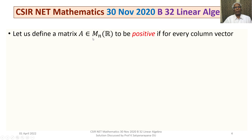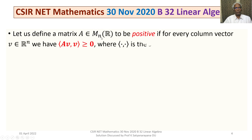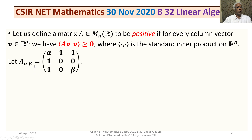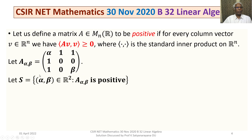The problem defines a matrix A in M_N over R to be positive if for every column vector V in R^N, the inner product ⟨Av, V⟩ is greater than or equal to 0, where this is the standard inner product of R^N. Let A(α,β) be the 3×3 matrix whose first row is (α, 1, 1), second row (1, 0, 0), third row (1, 0, β). Let S be the set of all ordered pairs (α, β) in R² where A(α,β) is positive.